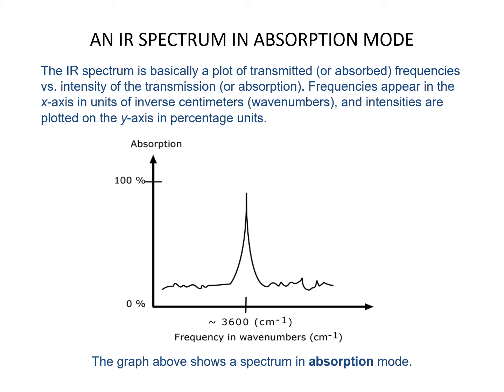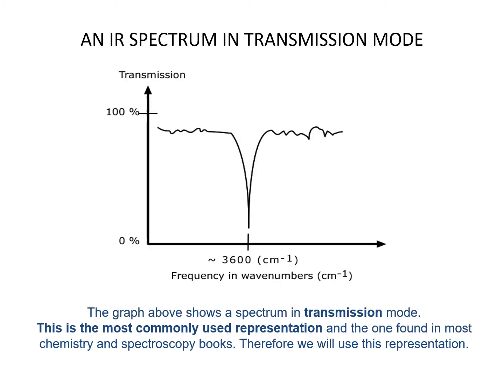The IR spectrum is basically a plot of transmitted or absorbed frequencies versus intensity of the transmission or absorption. Frequencies appear on the x-axis in units of inverse centimeters or wave numbers, and intensities are plotted on the y-axis in percentage units. The graph can be shown in absorption mode or transmission mode. Transmission mode is the most commonly used representation, found in most chemistry and spectroscopy books, and therefore the one we will use.